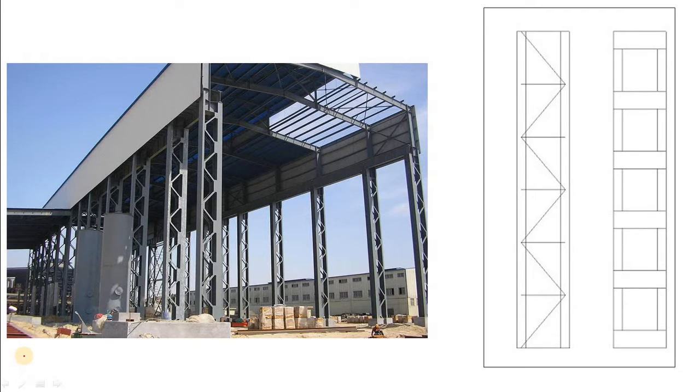In the last video, you have already learned why built-up columns are used. You also know that lacing or batten is used in built-up columns. In addition to keeping the components of the built-up section in place, they also carry shear and moment. But from where does this shear or moment come to the lacing or batten, and how do the lacing or batten carry them? Well, this video will explain all these questions.